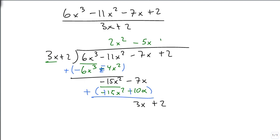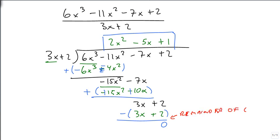3x goes into 3x once. That gives us 3x plus 2. And when I subtract that, when I subtract something from itself, I get 0. So my answer is simply 2x squared minus 5x plus 1, because I have a remainder of 0. So I don't need to write it.